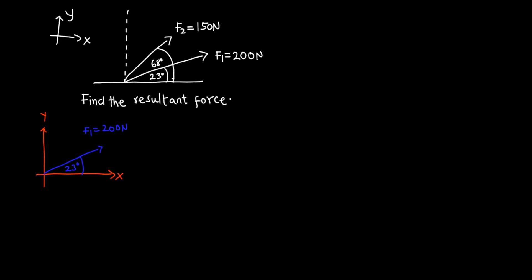F1 will have two components: one in the x direction and one in the y direction. Let's indicate those — this is the component in the x direction, F1x, and this is F1y. These are the components of F1 in the x and y directions. We can find them using trigonometry.